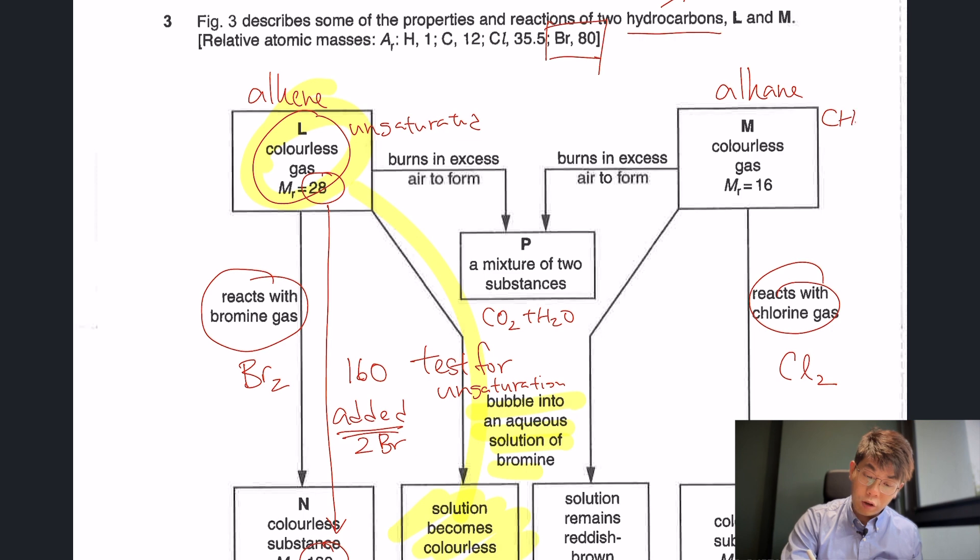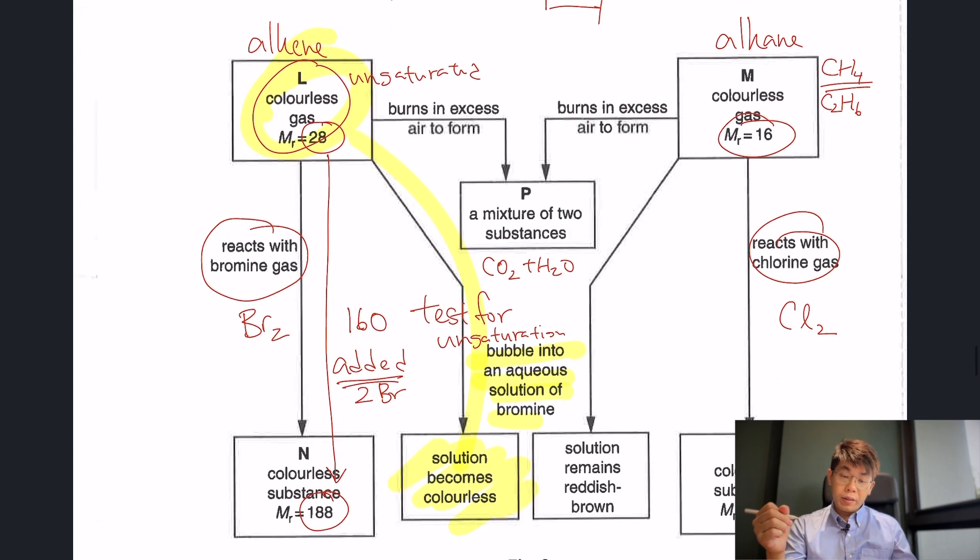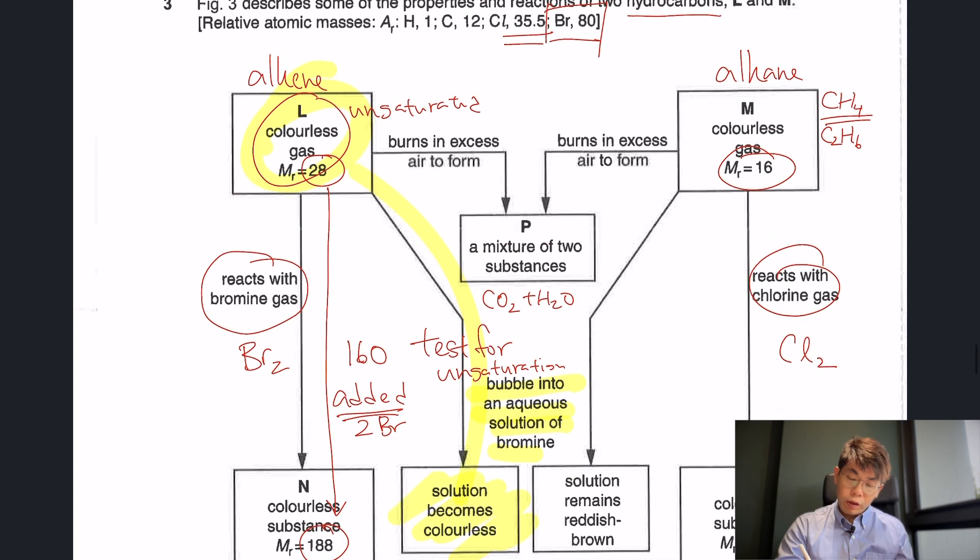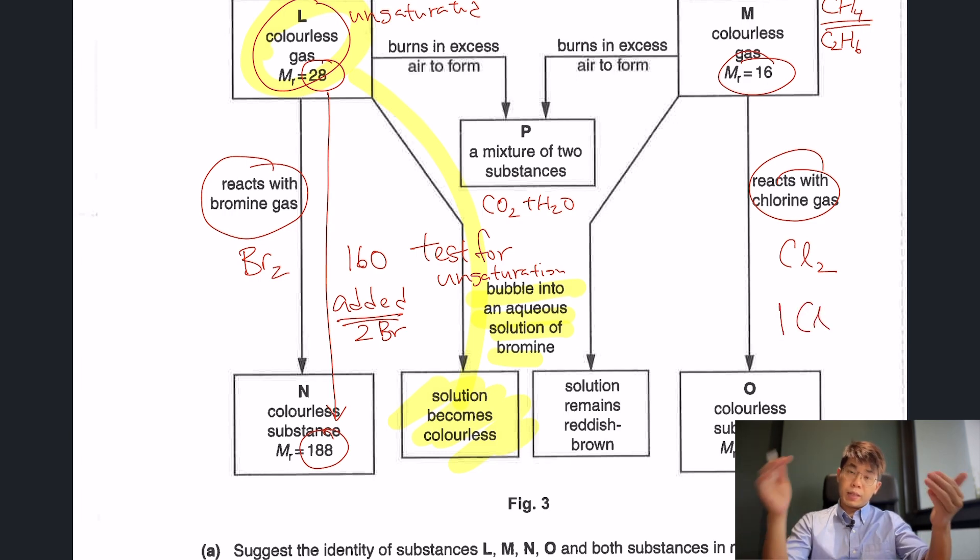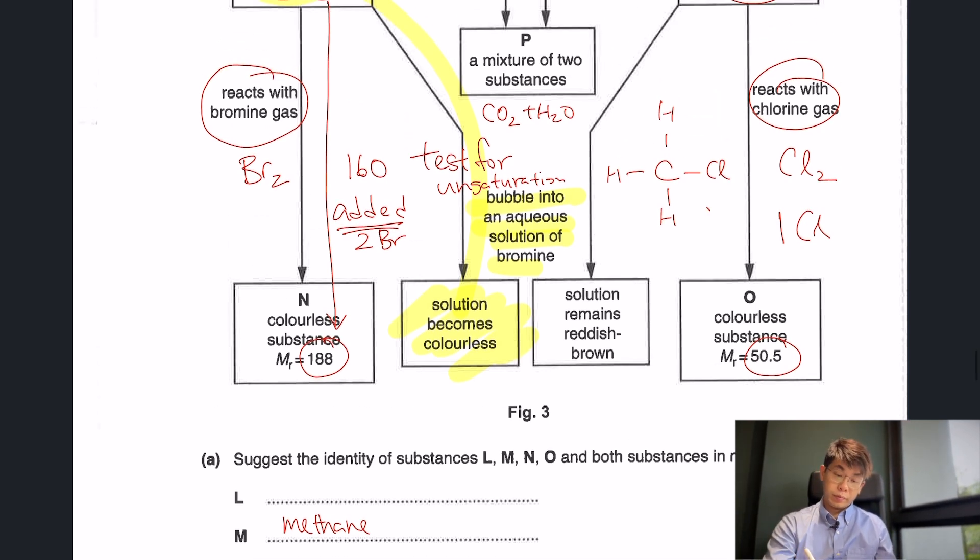We know that M is an alkane. We know methane CH4 and ethane C2H6. Which one can have an MR of 16? We can see that methane has an MR of 16. So M is methane. When we react with chlorine gas, it went from 16 to 50.5. Chlorine has an MR of 35.5. So only one chlorine must have substituted in. For my methane, I have done one substitution with chlorine. So this is chloromethane. O is chloromethane.